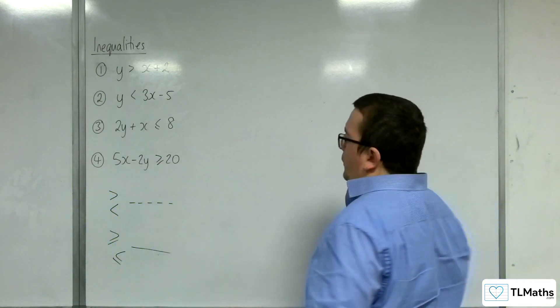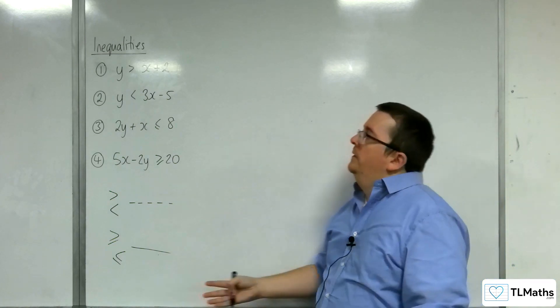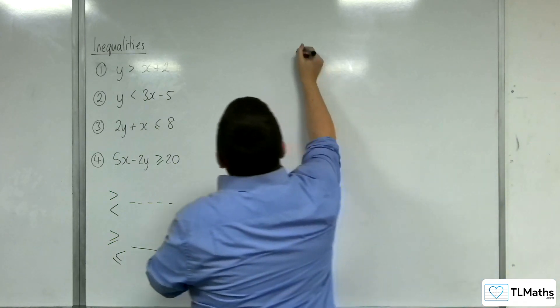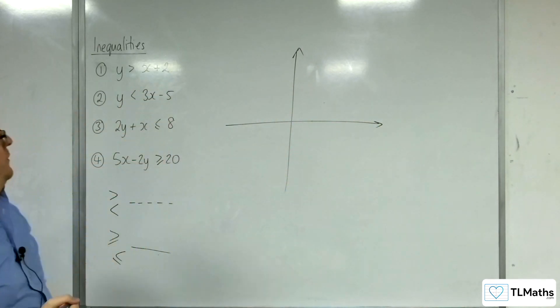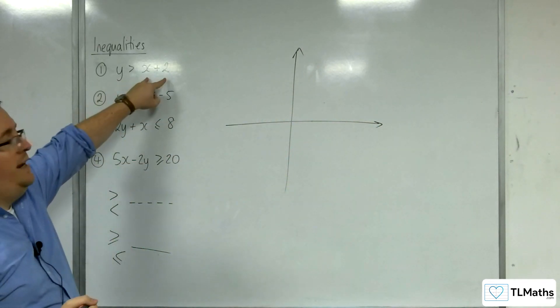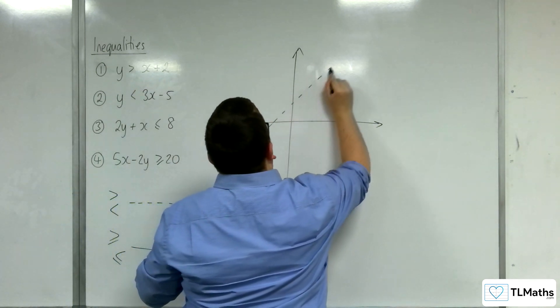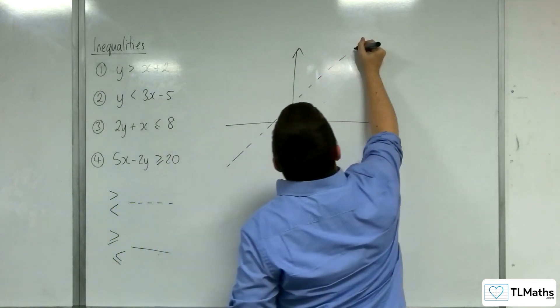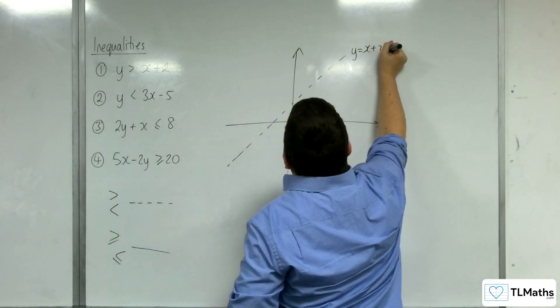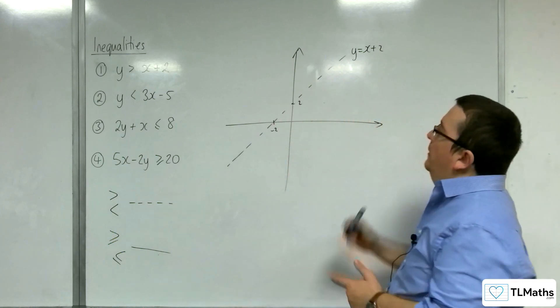Just to be clear, this is the case for any - it doesn't have to be linear graphs, it could be quadratics as well. So, the first one, y is greater than x plus 2. The line y equals x plus 2 would look like this. So, we want a dotted line. That's y equals x plus 2, and this is the line that would be going through 2 and minus 2, like so.